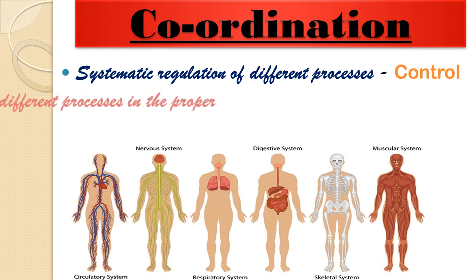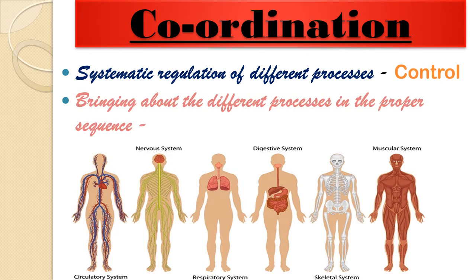Life goes on smoothly if there is proper coordination between the different organ systems and the stimuli in the surroundings. Systematic regulation of different processes can be called control, and bringing about different processes in the proper sequence is called coordination. When different organ systems work in a proper sequence with proper control, it is called coordination.